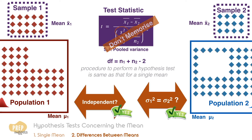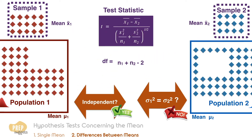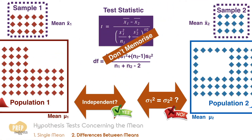In the case where the variances cannot be assumed to be equal, the variances cannot be pooled. We have to use the individual sample variances instead. The degrees of freedom are a lot more complicated. Similarly, you're not expected to memorize these formulae.